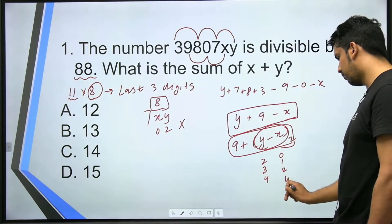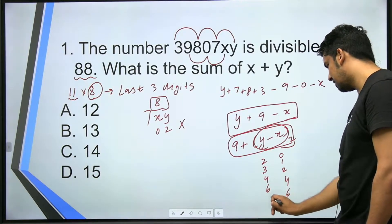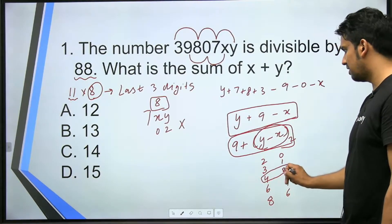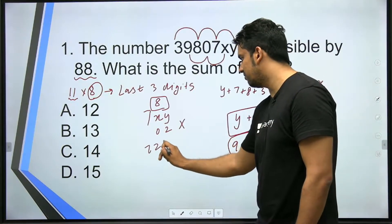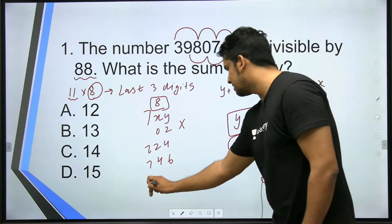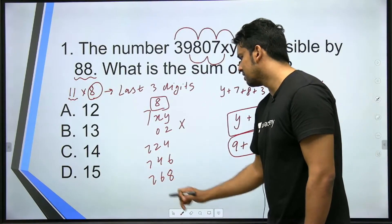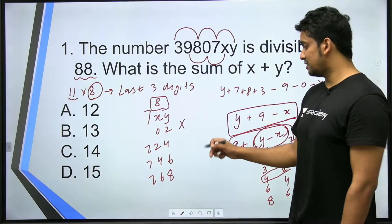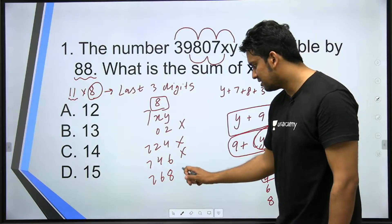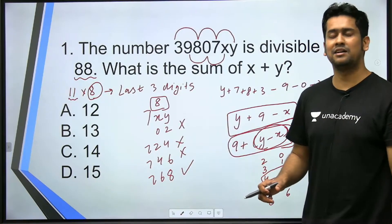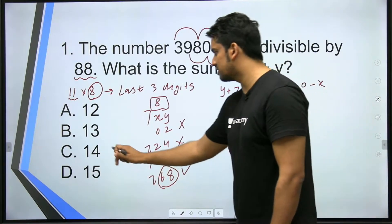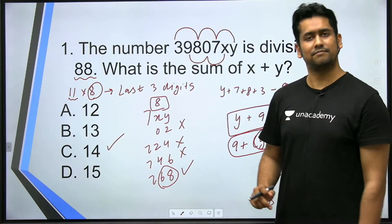Next time I'll make sure to only write even values here. So 2, 4; 4, 6; 6, 8. Let's check for these. So x is 2 and y is 4: 724. Next is 746. And next is 768. Among these three numbers, which number is divisible by 8? This is not. This number is not. This number is divisible by 8. Hence your answer is, what did he ask us? What is the value of x plus y? 6 plus 8, answer is 14.